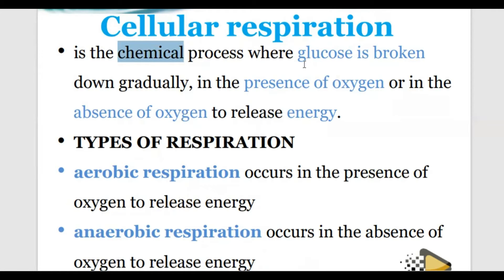Which chemicals are involved? We have what are called the raw materials - the things which are supposed to be present - and also you have what you call enzymes. So the enzymes are also supposed to be present so that this process can take place. That's what we call cellular respiration.